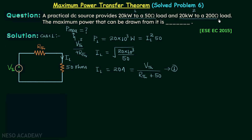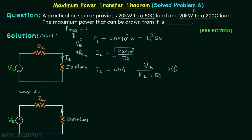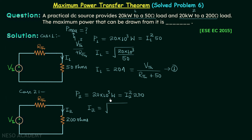Moving to case number 2, Vth and Rth remain unknown. RL is equal to 200 ohms and we assume the load current as I2. The power delivered, P2, is 20 kilowatts, equal to I2 squared multiplied by 200. Solving for I2 gives the square root of 20,000 divided by 200, which equals 10 amperes.